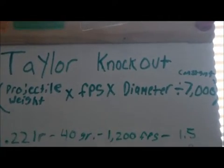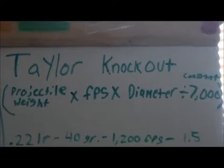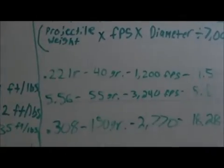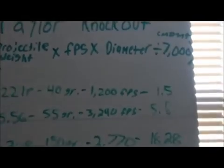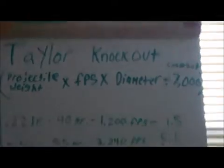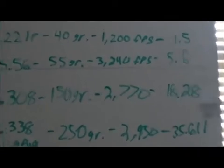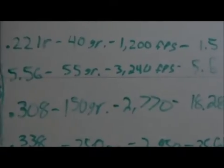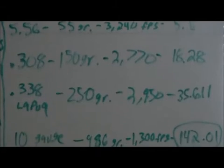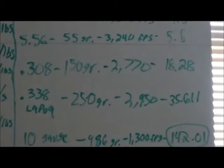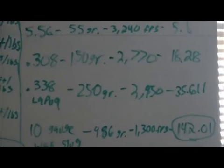You have a 22 LR that goes 1.5 TKO. A 5.56 has 5.6 TKO. A 308 has 18.28 TKO, and a 338 Lapua has 35.61 TKO.